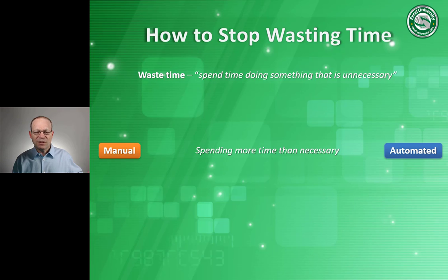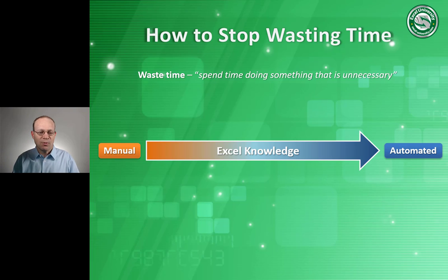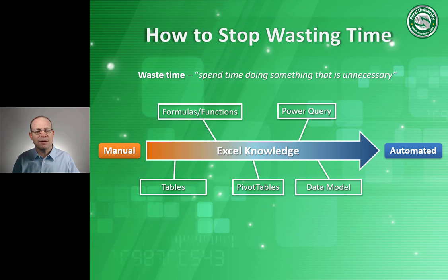So what's the thing that gets us from manual to automated? It's simple — it's just Excel knowledge. And this is the same for everyone. The more we learn, the more we're able to move from manual to automated. Today we're going to talk about five things that will hopefully move us to the right: a table, a function, a pivot table, Power Query, and the data model.